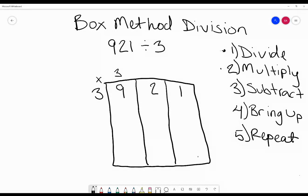We subtract 9 minus 9 gives us 0. We bring up, but as you can see we have nothing to bring up, so we move on to step 5 which is to repeat.